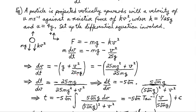A particle is projected vertically upwards with a velocity of u metres per second — so at the instant it is released it has velocity u. It is rising against a resistive force of k times v squared. Our constant k is given as g/25, and the initial velocity u equals 4g, which is just under 40 metres per second. This value u equals 4g will serve as a boundary condition later.